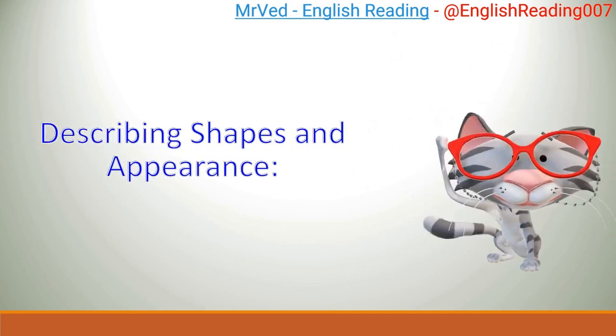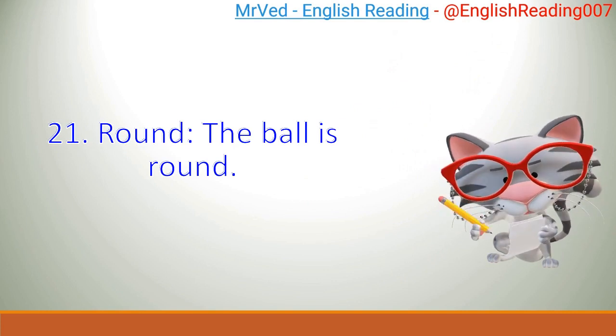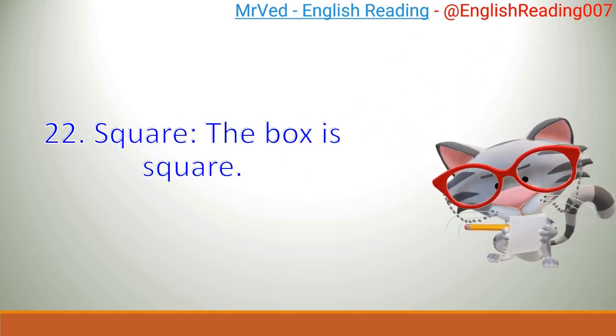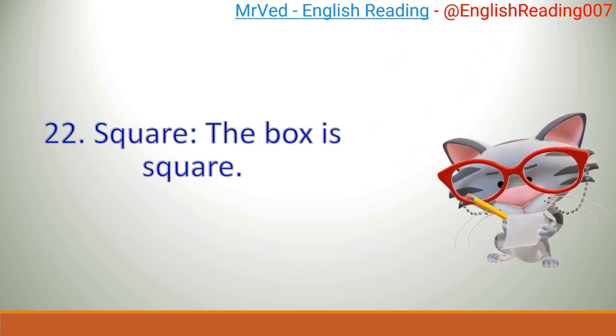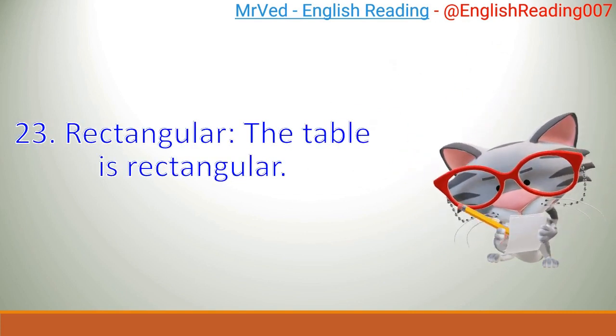Describing Shapes And Appearance. 21. Round. The ball is round. 22. Square. The box is square. 23. Rectangular. The table is rectangular.